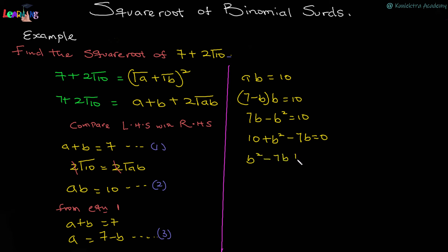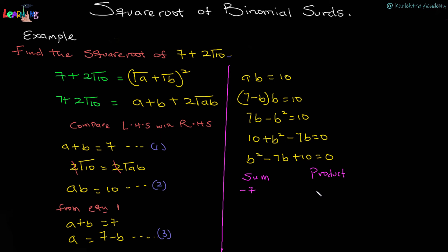We now have the quadratic equation b² − 7b + 10 = 0. To factorize, we look for two factors that add to −7 and multiply to +10. From 10, we can find −5 and −2: −5 + (−2) = −7, and (−5) × (−2) = +10. So the two factors are −5 and −2.